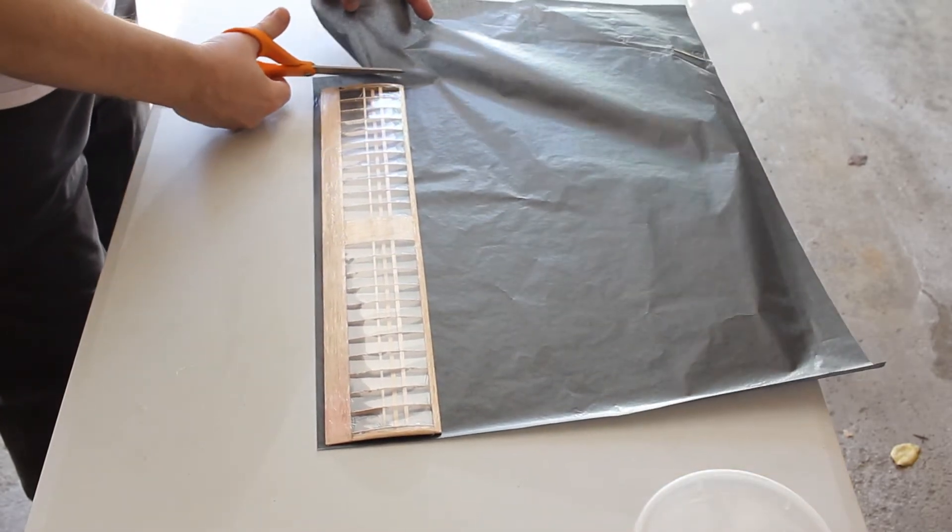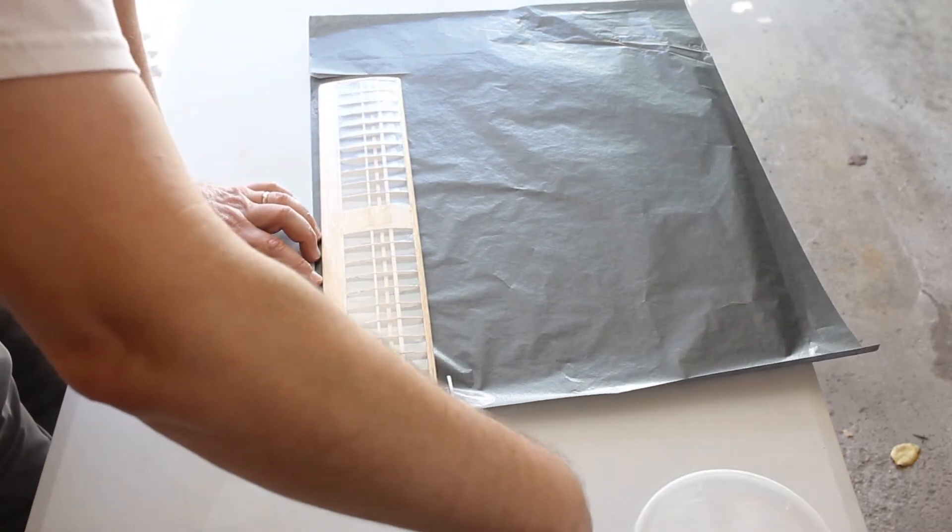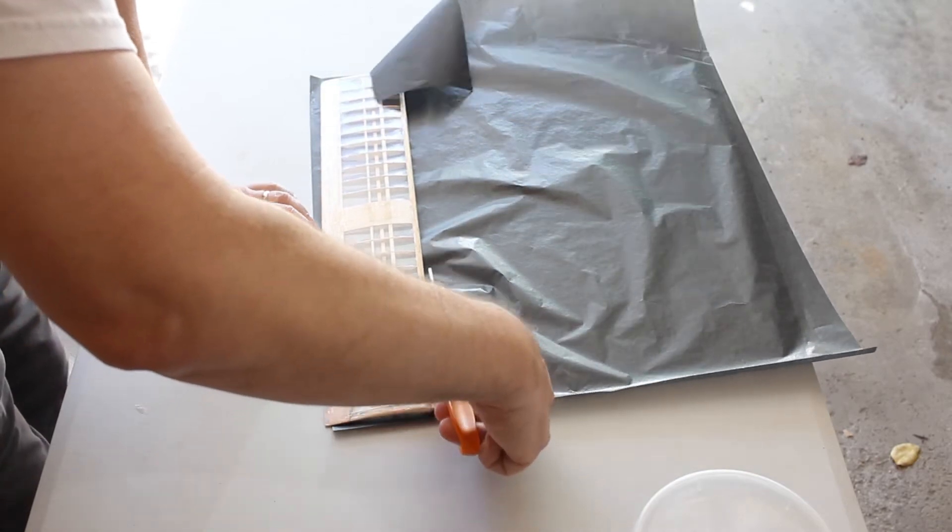I'm going to cut out a piece of black tissue for the bottom. This is actually black Asaki.